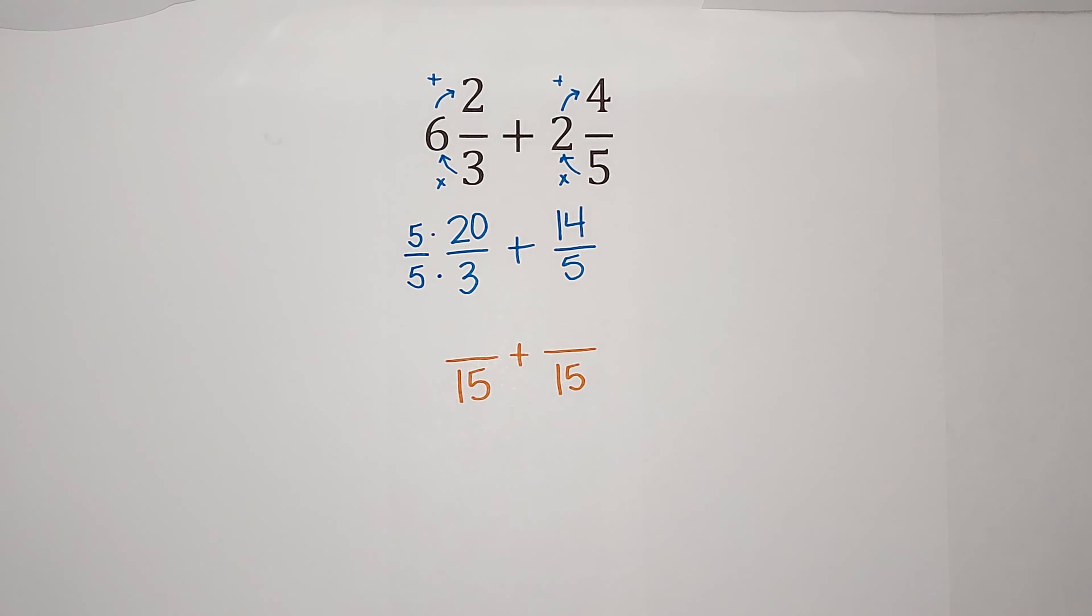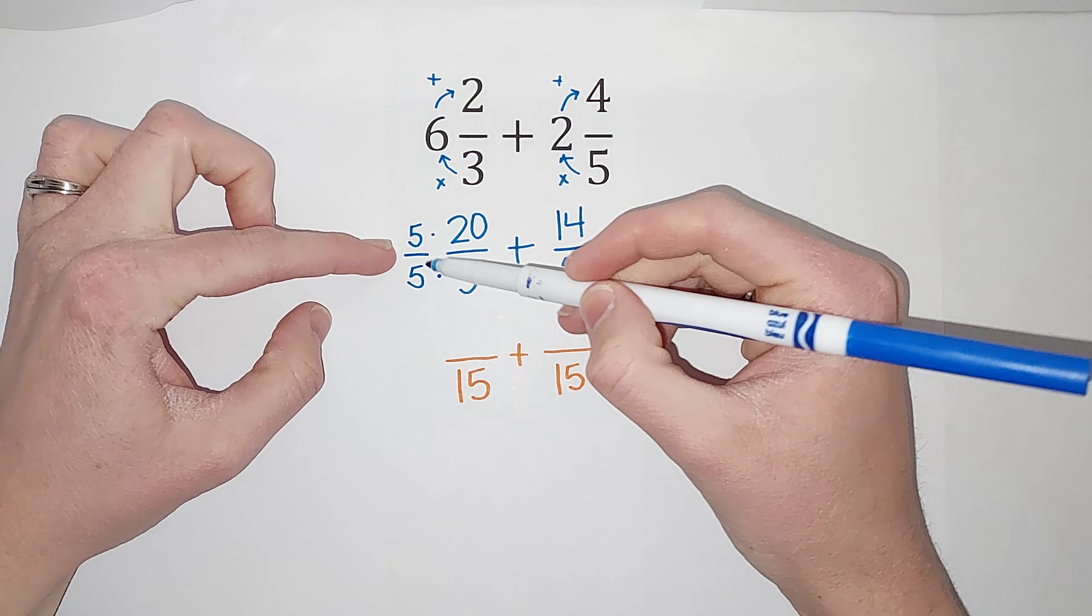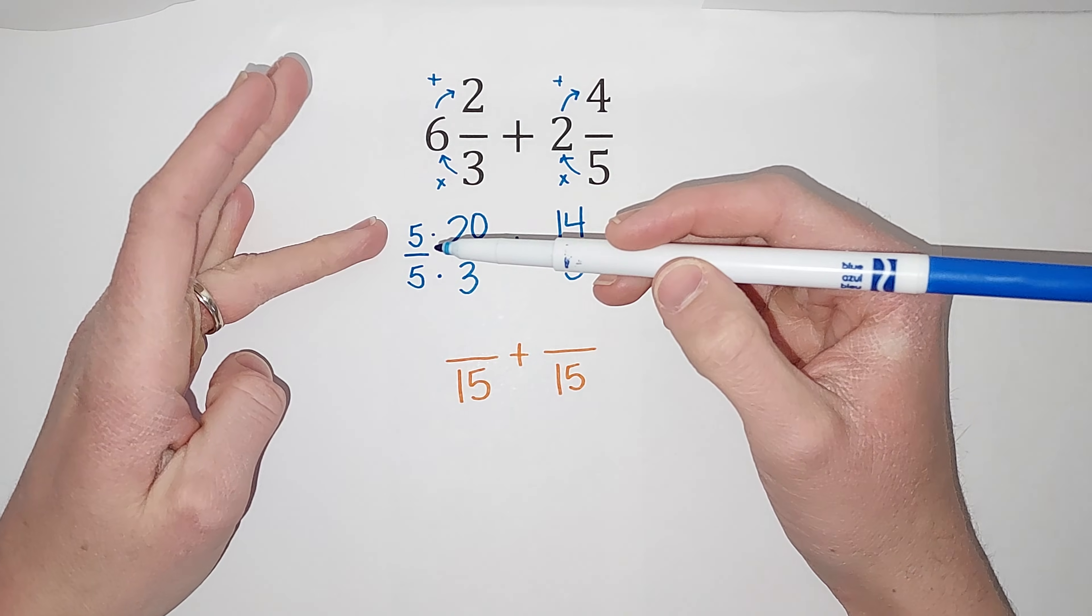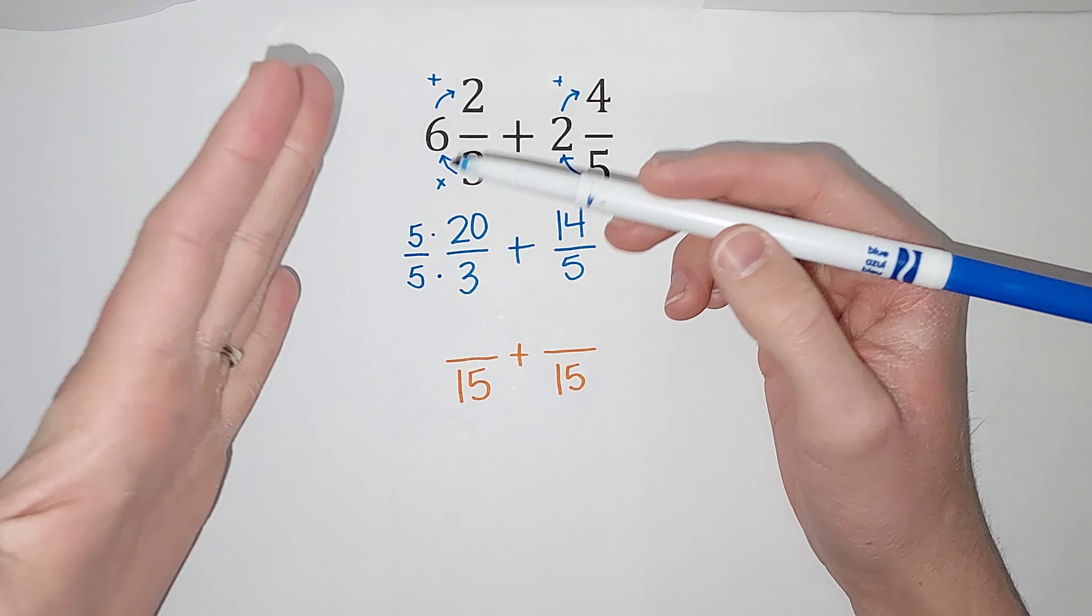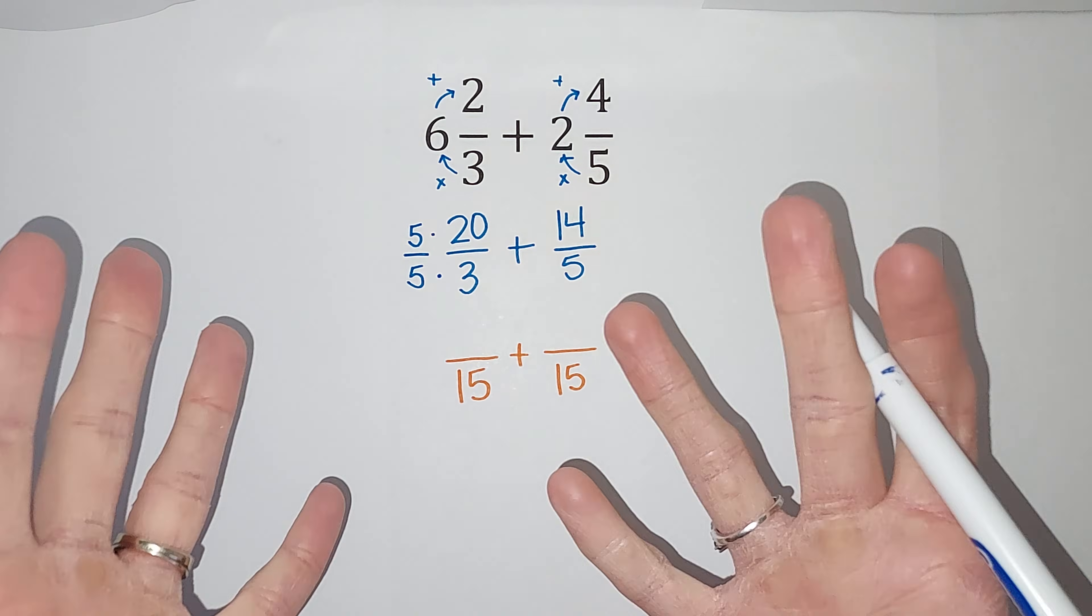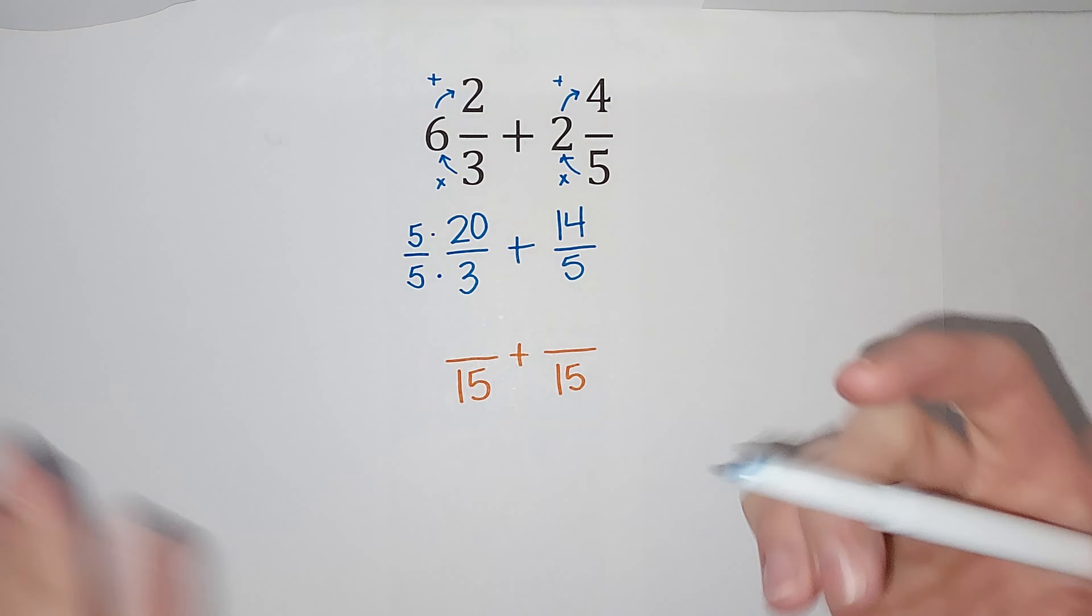Why is that? Why can I do that? Because five over five is just one. So it's really like I'm multiplying this by one. It's just a really weird looking one, right? So I'm changing what the fraction looks like, but not its value.